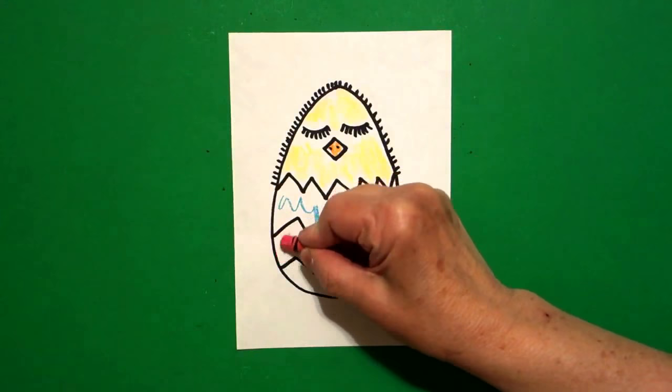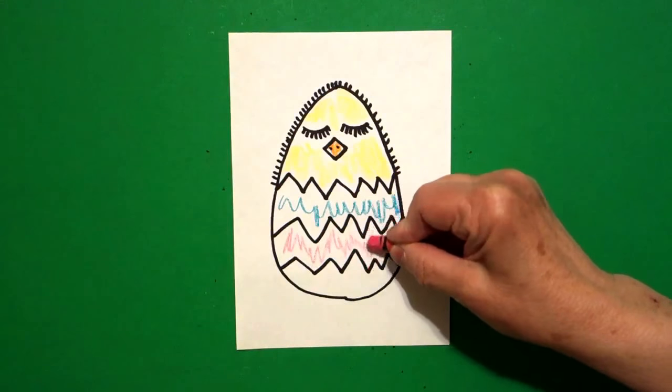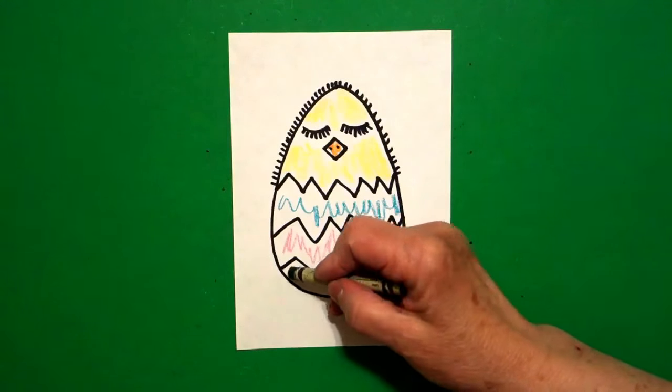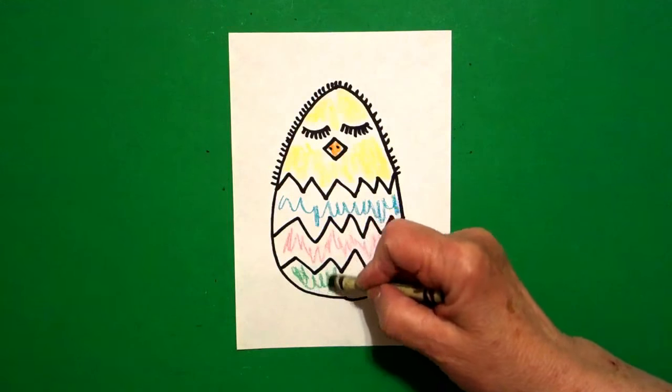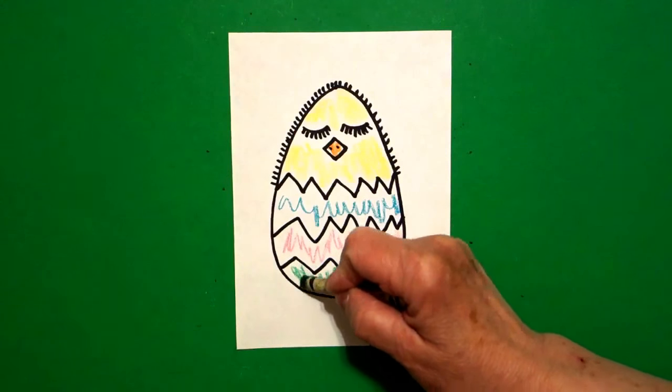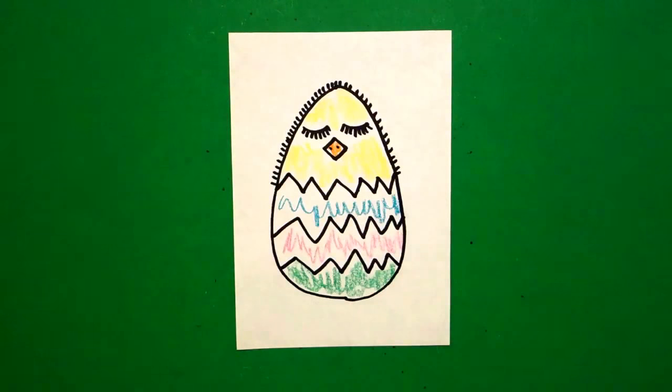I did my second stripe pink. You can make your own choice. And I made my bottom green, and you can make your own choice. It's up to you. Let's see what this looks like all colored in.